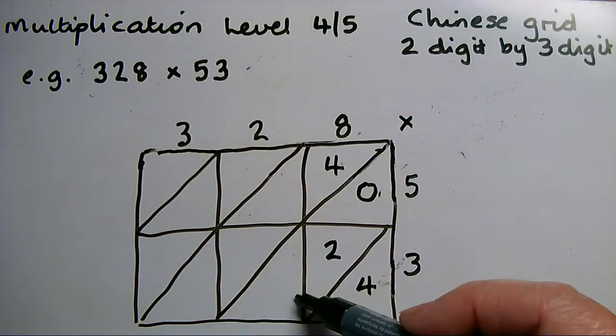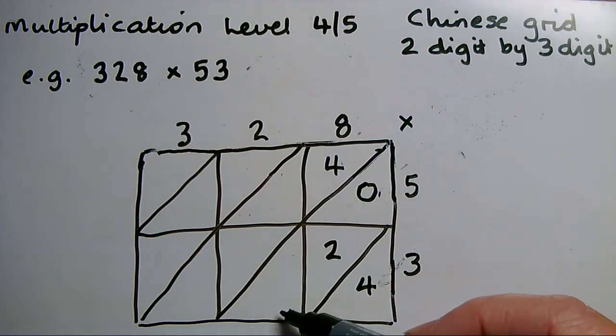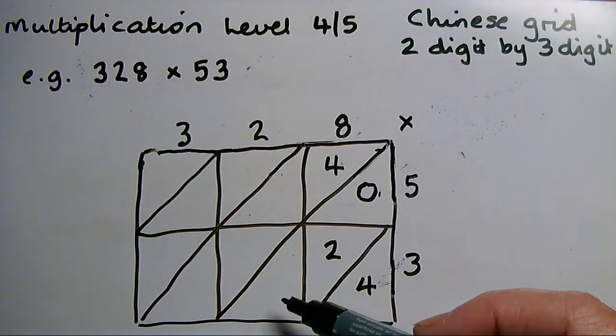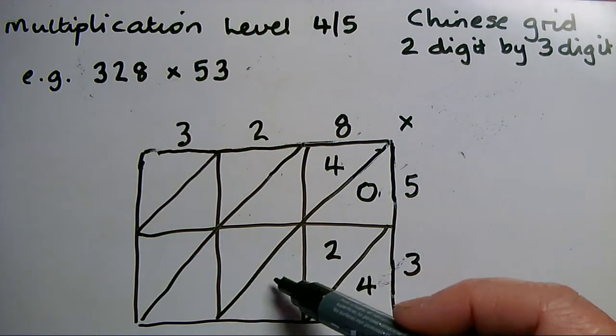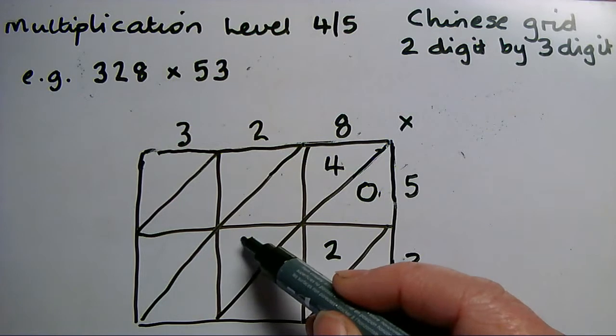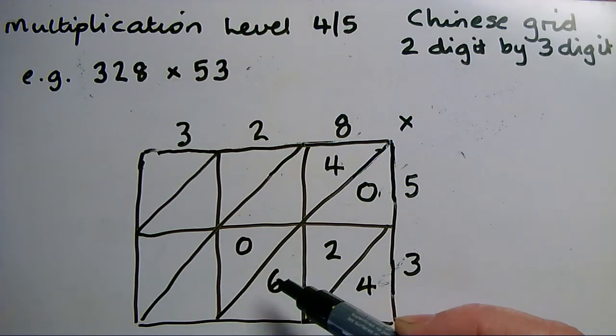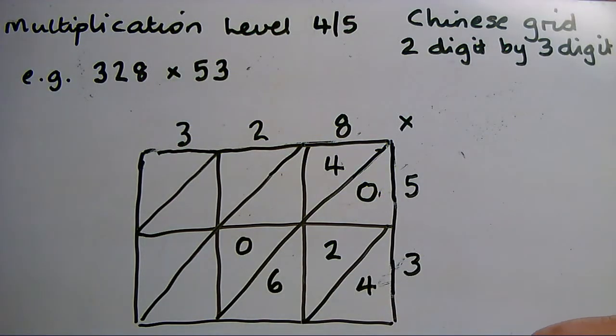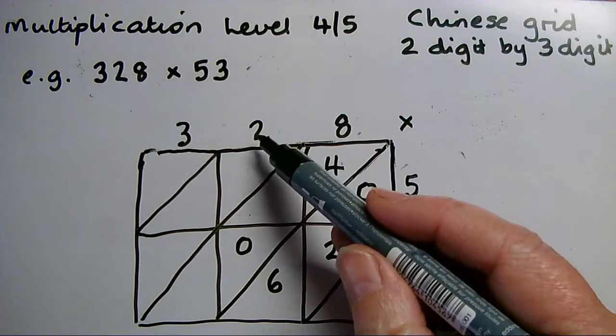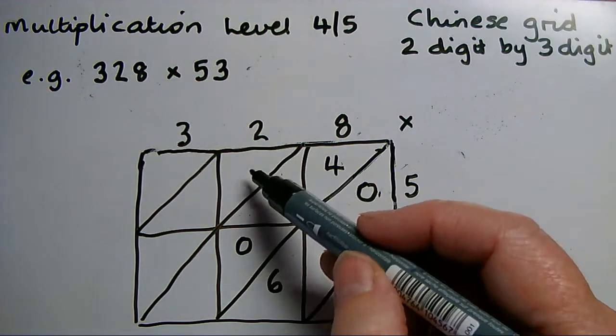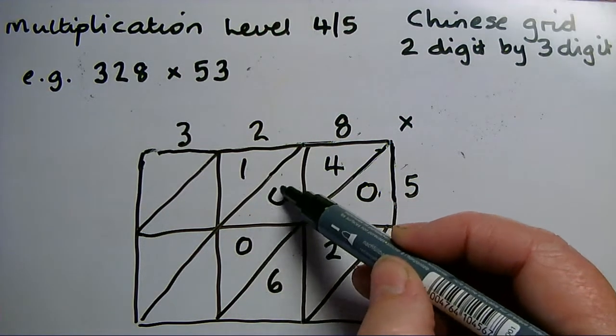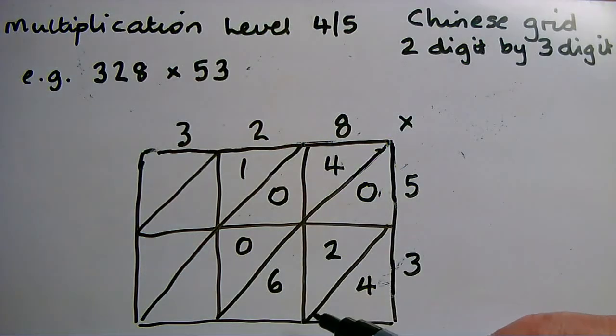In this box, the bottom center, 2 times 3 is 6. That only has one digit but I need two digits to fill my two triangles, so I use a 0. There are no tens, 6 units. I'll put it that way round. 5 twos for this center top: 1. 5 twos are 10, 1 ten, again no units.